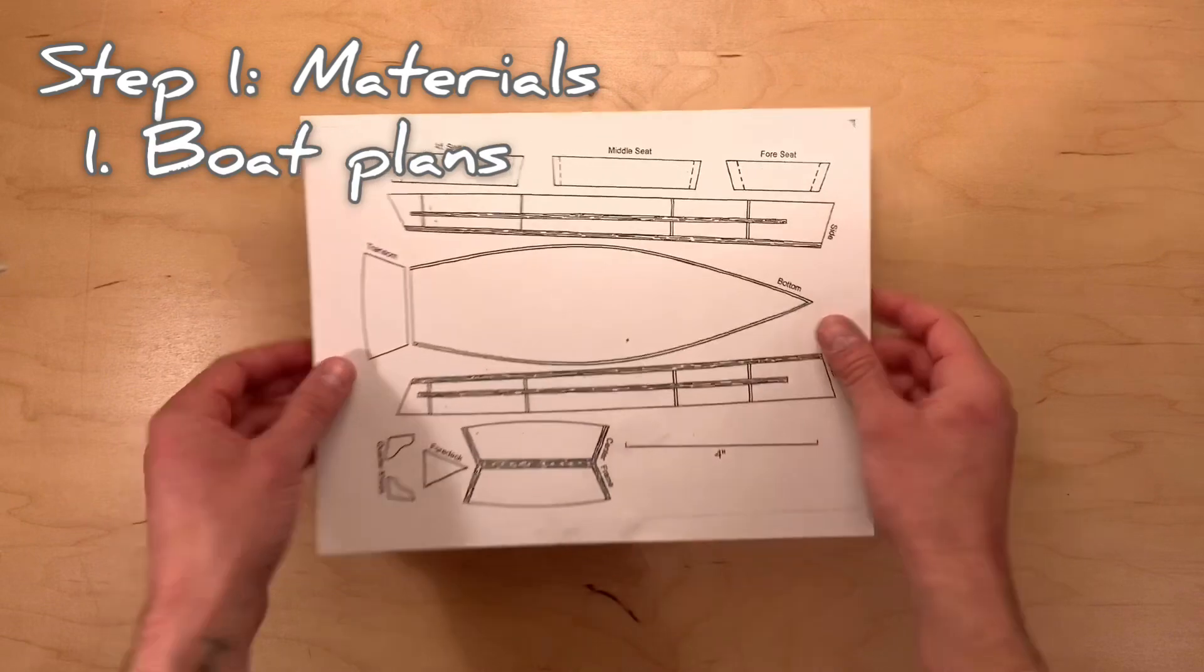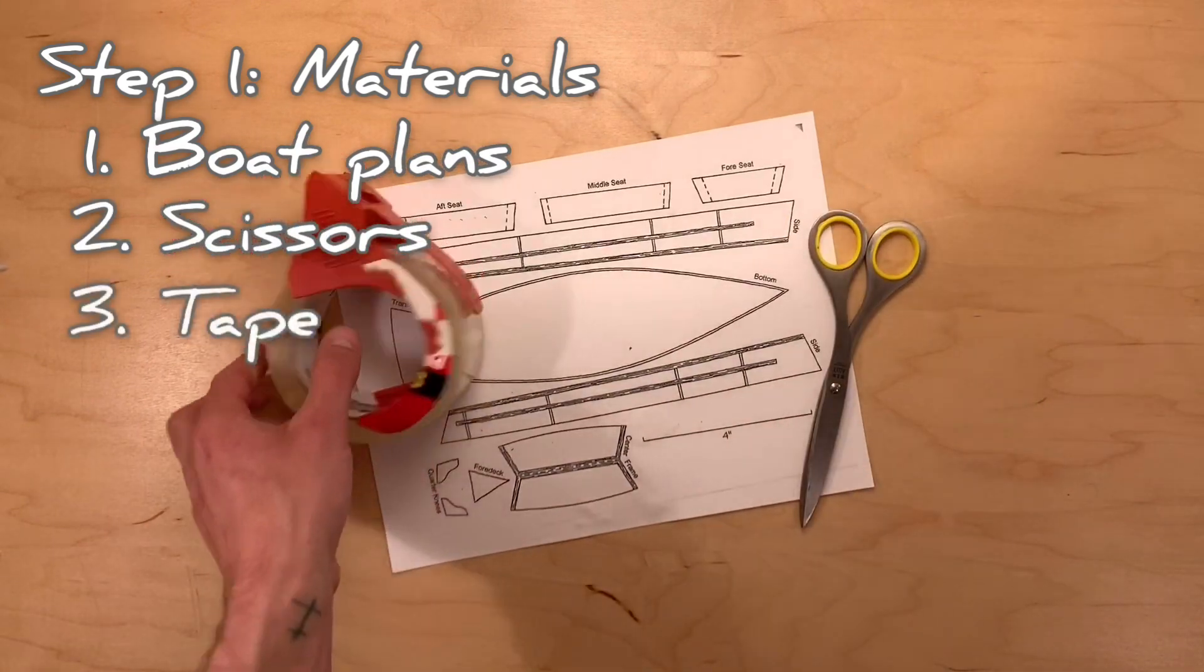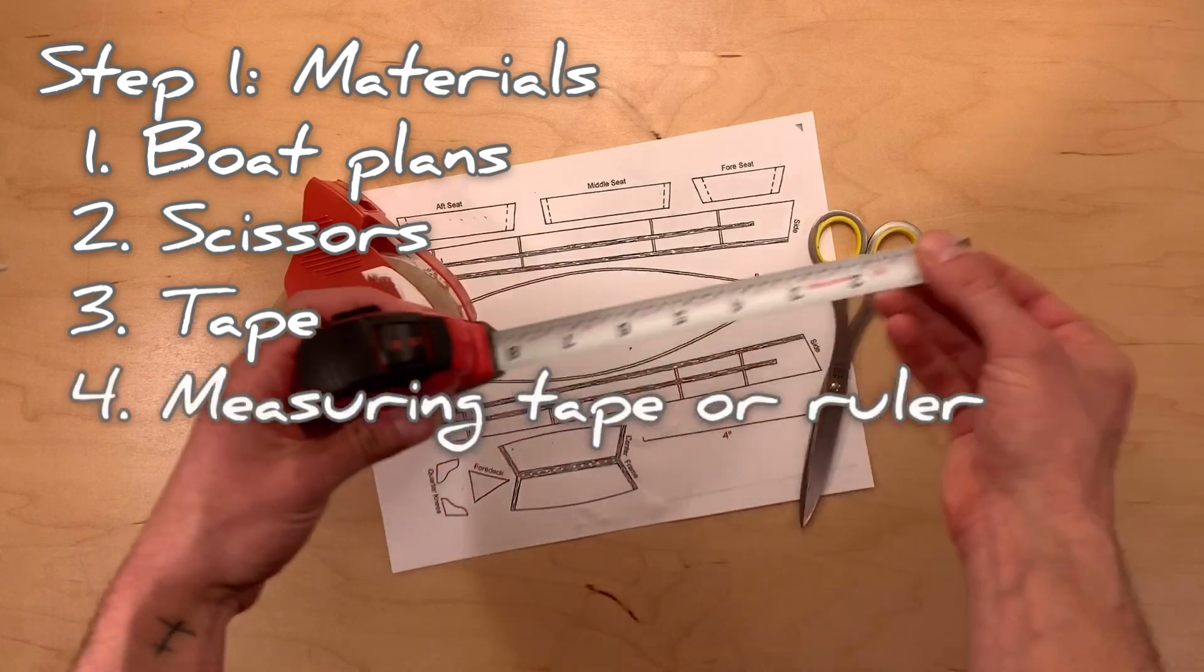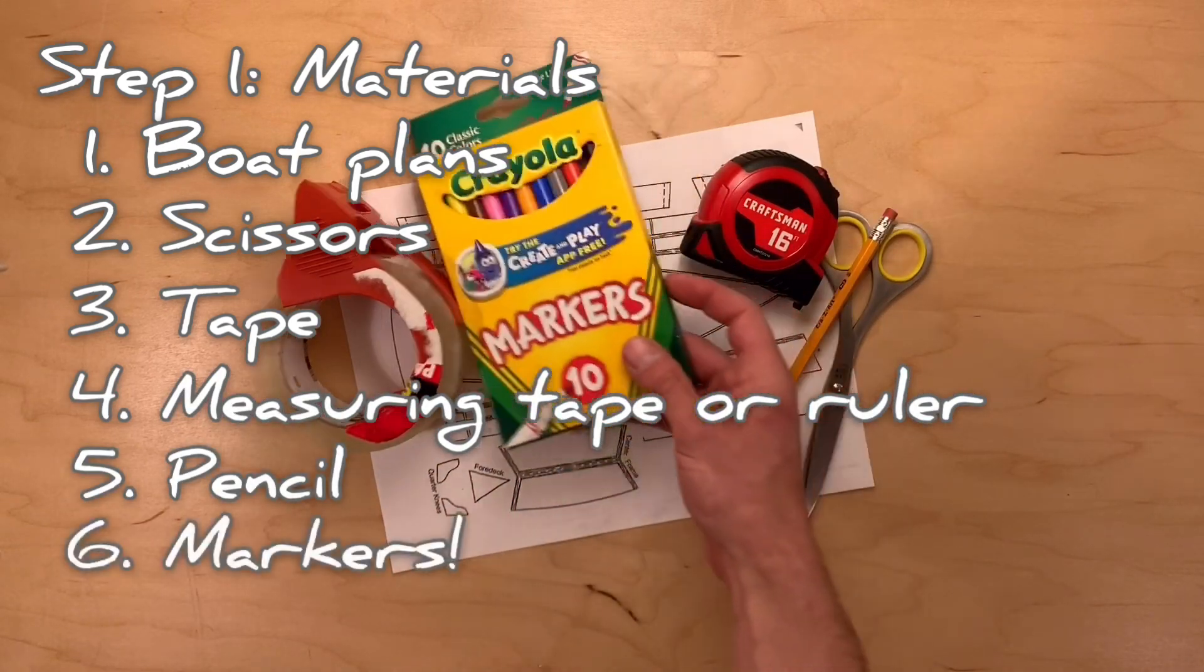First, we need boat plans, scissors, tape, measuring tape or a ruler, a pencil, and markers for coloring at the end.